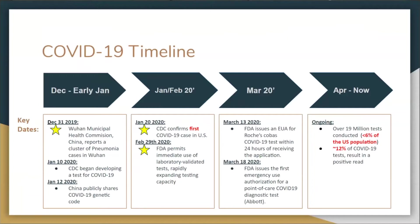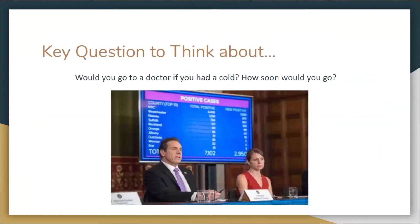In March, testing really ramped up — companies tried to create more tests, different tests, more accurate tests. Today there are over 19 million tests conducted in the United States. This may seem like a substantial number, but it comes down to roughly just under six percent of the U.S. population. This is a key question to think about: if you had a cold, how soon would you go to a doctor? It ends up being a very similar rationale when talking about COVID-19.